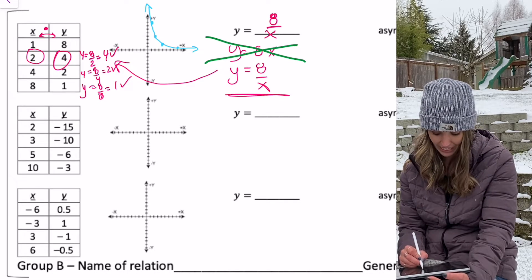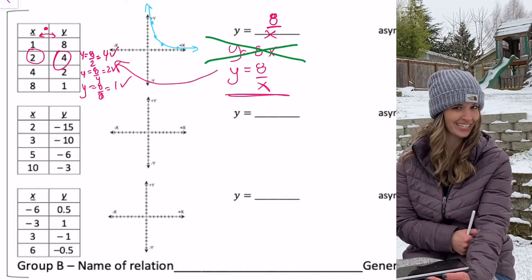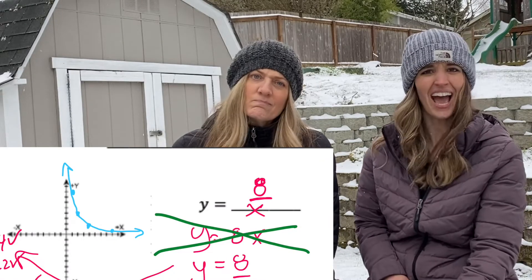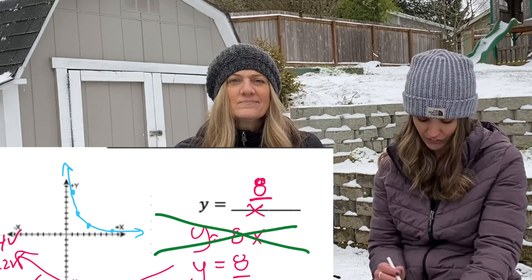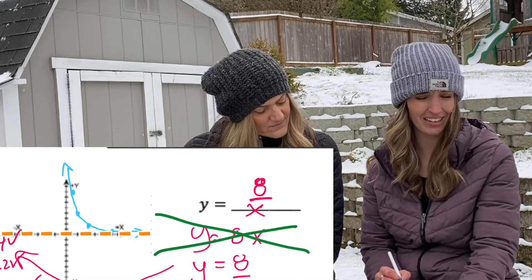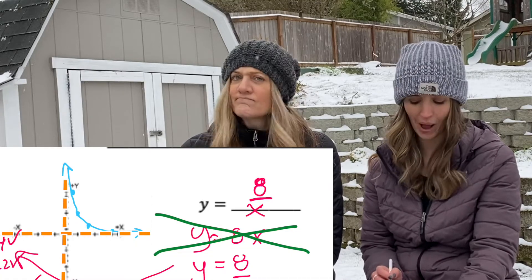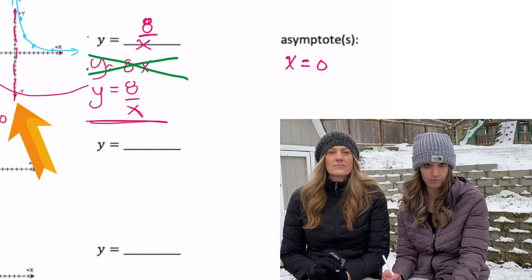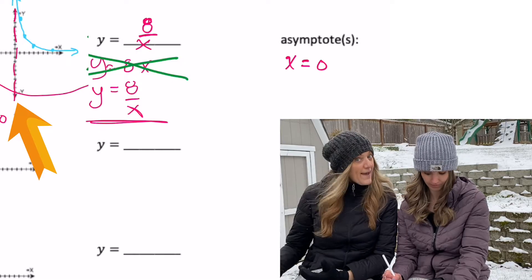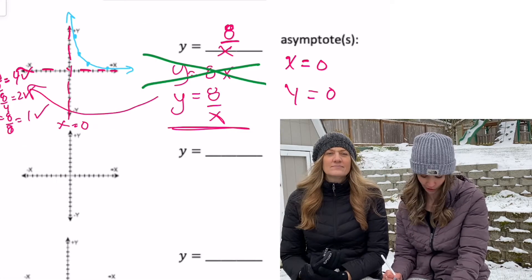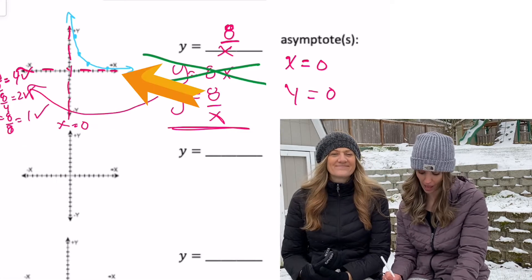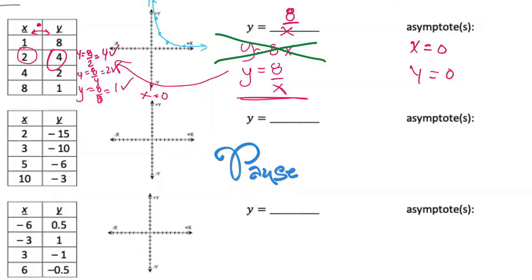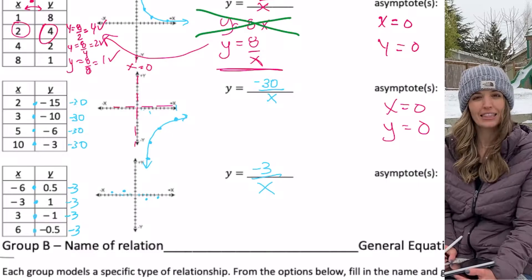So our equation is y equals 8 divided by x. Interesting — it looks like we have some asymptotes. This graph definitely doesn't cross the x-axis and definitely doesn't cross the y-axis. So I have a vertical asymptote at x equals 0 (the y-axis) and a horizontal asymptote at y equals 0 (the x-axis).